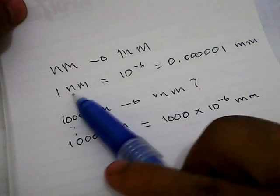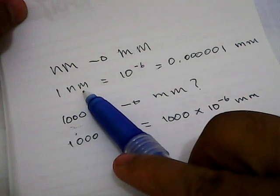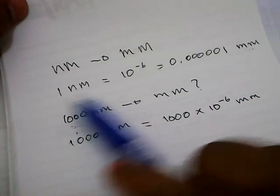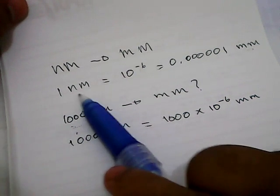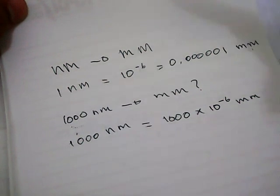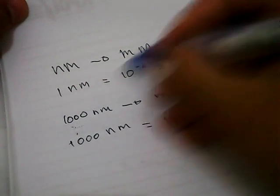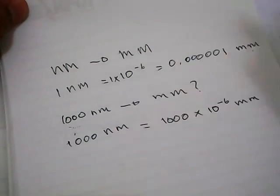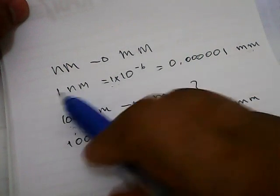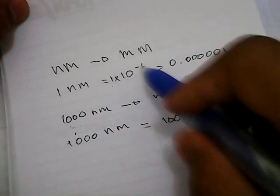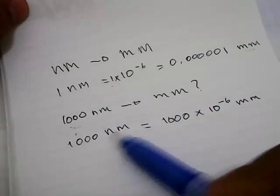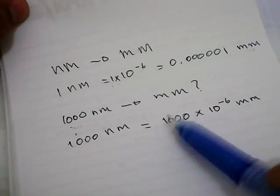Why do we have to multiply 1000 with 10 power minus 6? It's because we want to convert nanometers into millimeters. In this conversion factor, 1 nanometer is equal to 1 multiplied with 10 power minus 6. The same thing we do with our example problem: 1000 nanometers equals 1000 multiplied with this number.